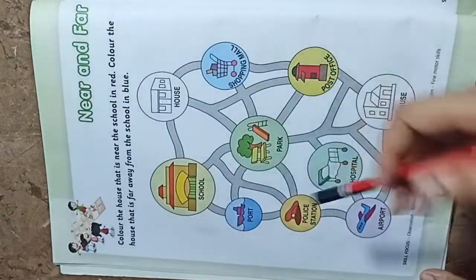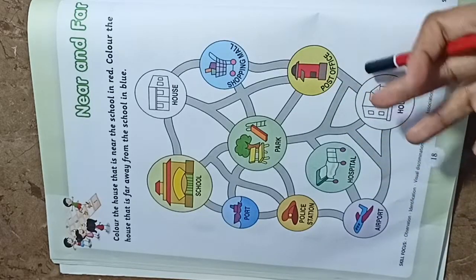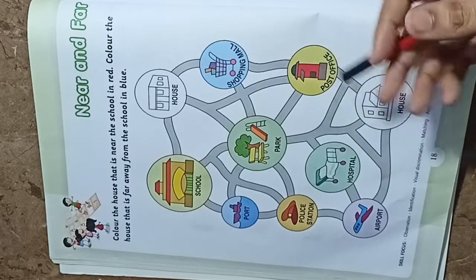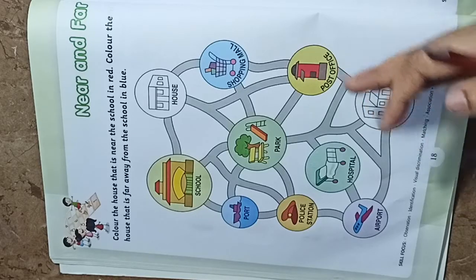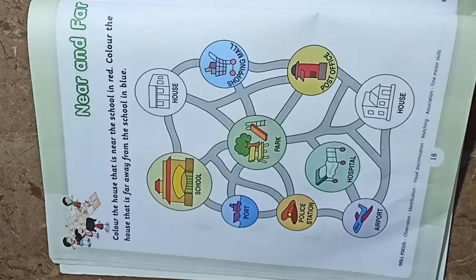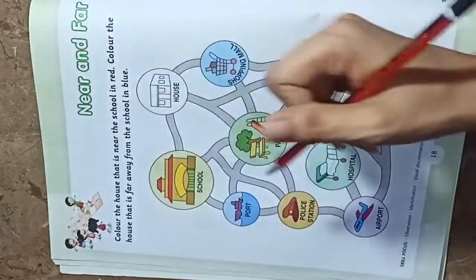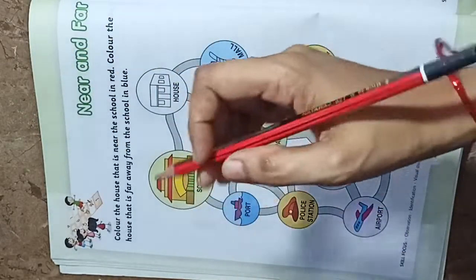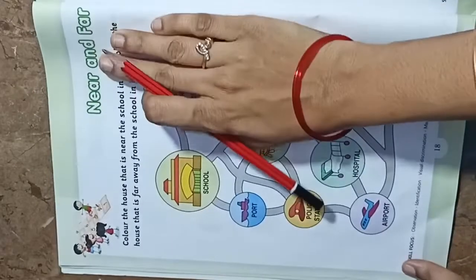Near means close by and far means a long distance away. For example, your house is nearby a shop where you can go and eat chocolate and biscuits. But if you go to a shopping mall far from your house, you are far from your house because there are many places and buildings. If something is very close, we say near; if something is a long distance away, we say far.